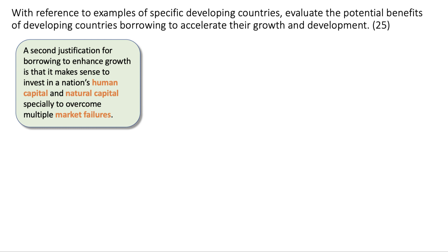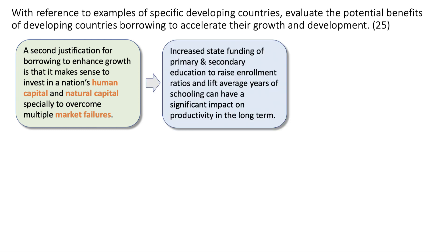For a 25 mark answer, you're looking to develop two major KAA points, two major evaluation points, and a final reasoned comment. The second justification for borrowing to enhance growth is that it makes sense to invest in the nation's human capital and natural capital, specifically to overcome multiple market failures — the state addressing market failure issues. For example, increased state funding of primary and secondary education, designed to lift enrollment ratios and increase the mean years of schooling, can have a significant impact on productivity in the long term.